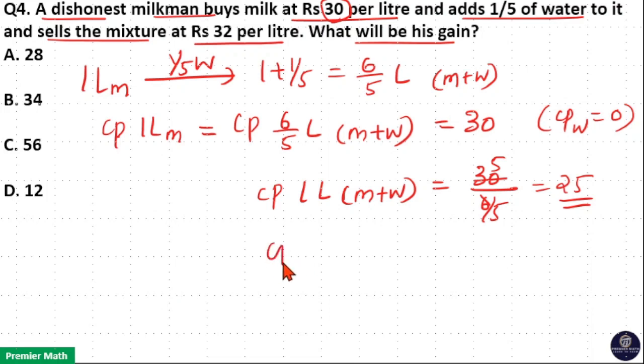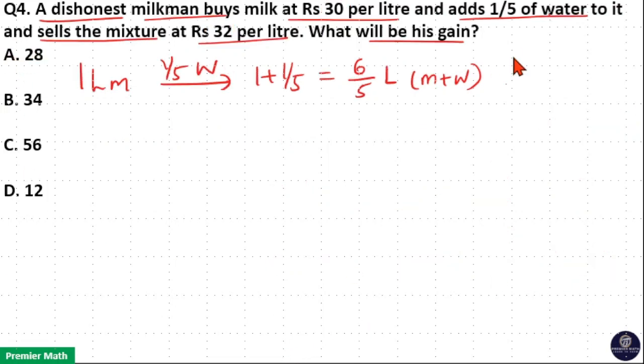Gain or profit in this case is equal to selling price of mixture Rs. 32 minus cost price Rs. 25, divided by cost price 25 into 100. 25 goes 4 times in 100. 32 minus 25 is 7, 7 into 4 is 28. So 28 percentage. Option A is your answer.